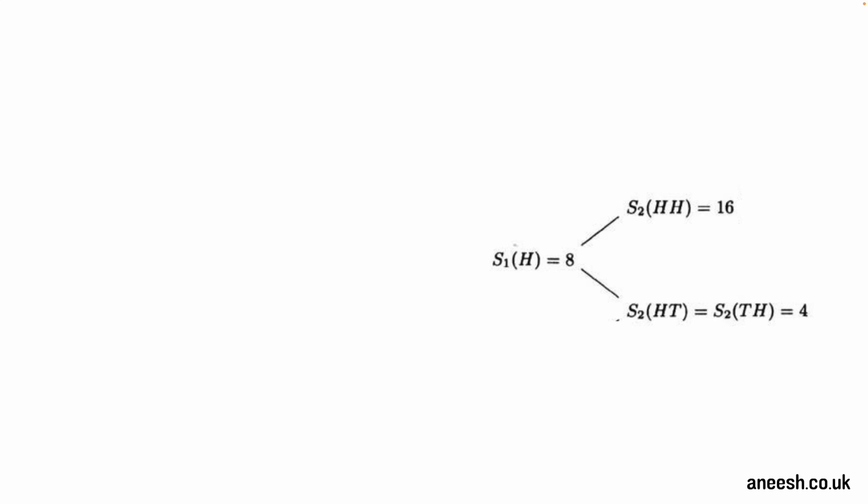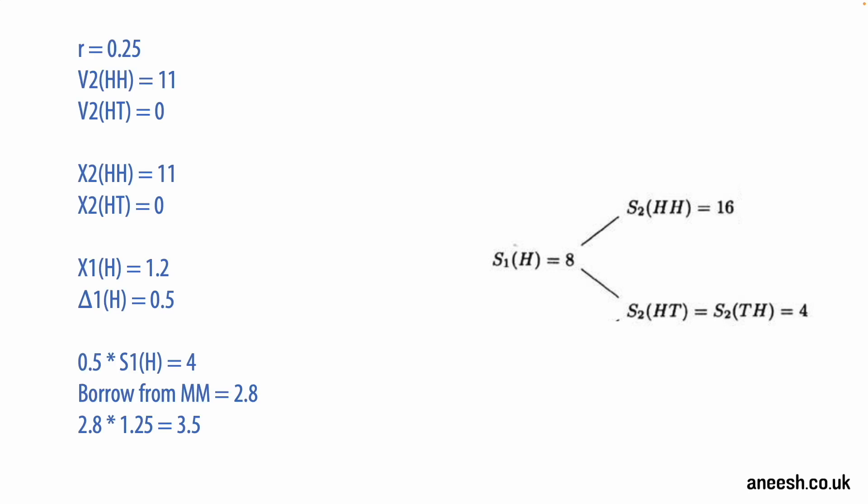So if we assume that we've sold our option for 1.2 and we have a delta of 0.5, we could begin to understand how our exposure to the option is no longer covered with this time period. At time S2(HH) the option value is now 11, which is the stock price of 16 minus the strike of 5. As the agent who sold the option, we need our portfolio X2(HH) to match this value of 11. We've sold the option for 1.2 using the risk-neutral price for our previous model. We now need to finance half a stock to have the same 0.5 delta.